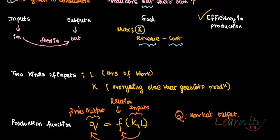There are two kinds of inputs. One is the labor input — the hours put into work. The other is the capital input. Capital could be buildings or machines — physical capital — or financial capital. To keep things simple, we will consider capital as everything else that goes into production apart from labor.